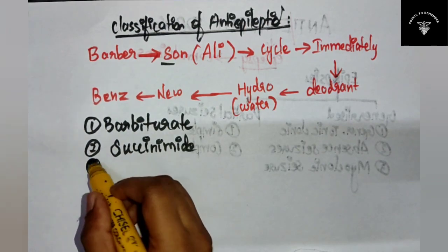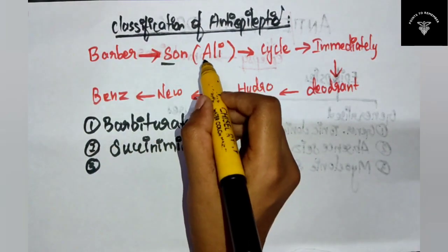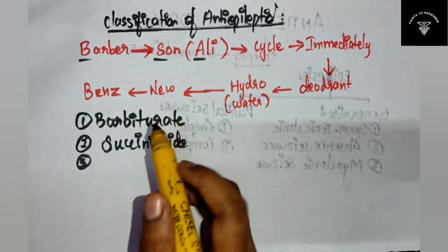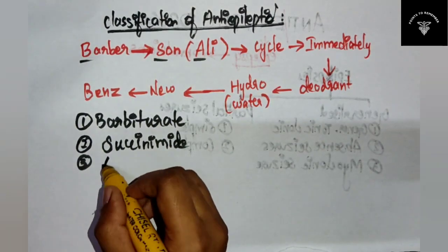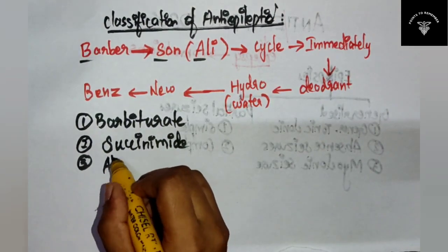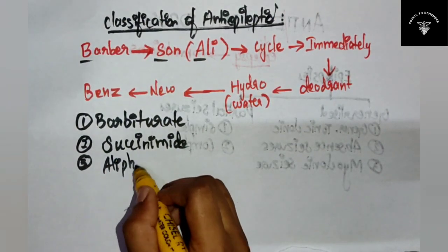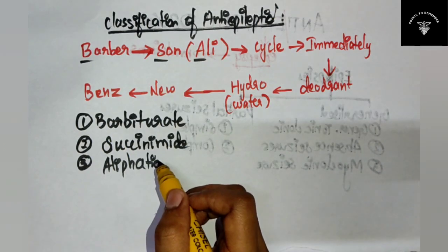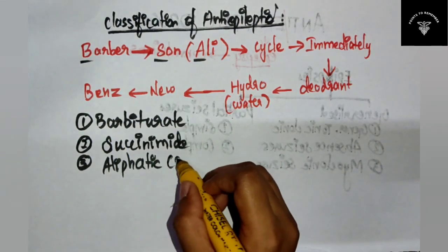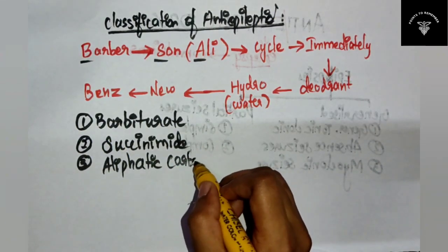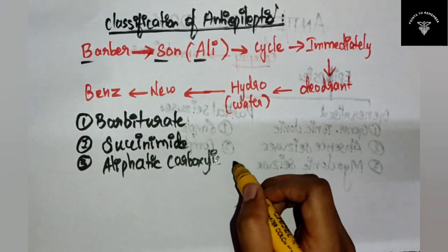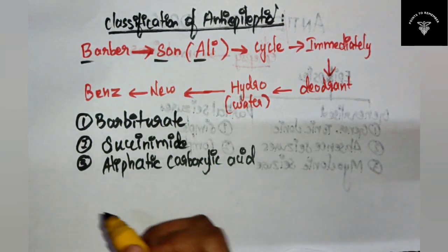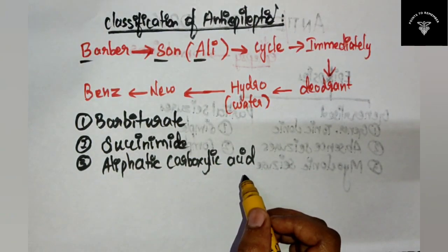Third one is Ali - his name starts with 'Ali', so you write it as aliphatic carboxylic acid derivative.